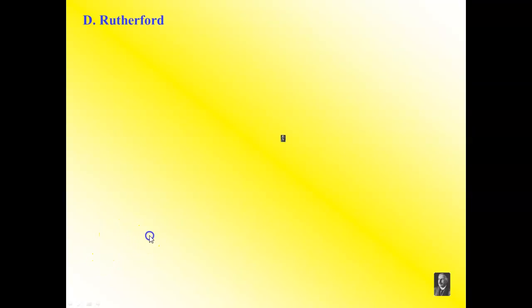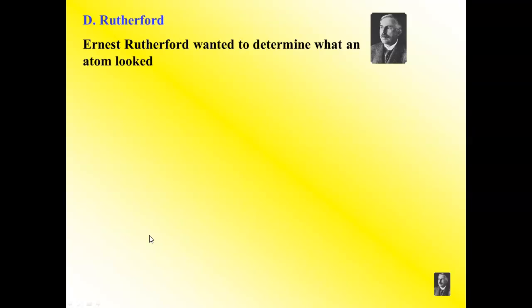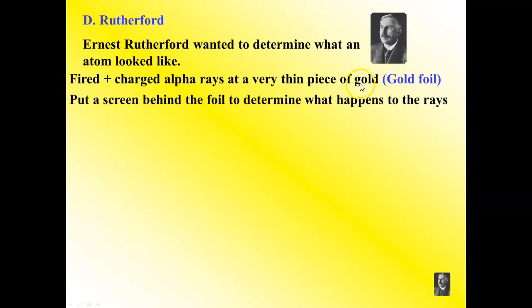Ernest Rutherford worked with radioactive particles. He figured he could use his radioactive particles to show that Thompson's model was true. Rutherford wanted to use what he knew to show what an atom looked like on the inside. He did one of the most well-known experiments in science, the gold foil experiment. He fired positively charged alpha rays at a very thin piece of gold foil. Why gold? Because gold is a very dense element, which means the atoms were probably really big. Gold is also highly malleable, so he could hammer the gold super thin, so maybe it was only a couple of atoms thick.